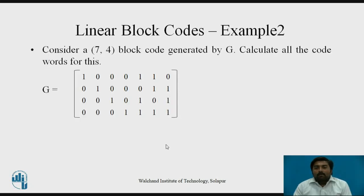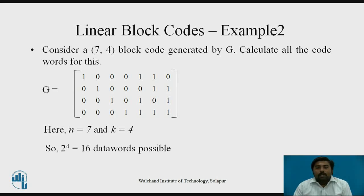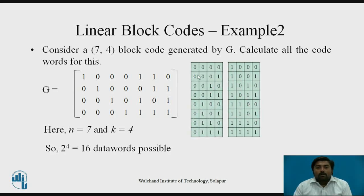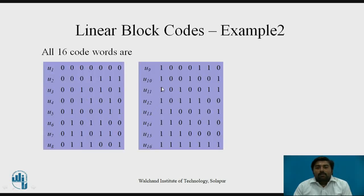Let us take another example with a (7, 4) block code. The generator matrix is given, where n equals 7 and k equals 4. There are 2 raised to 4 equals 16 possible data words. Using the procedure of multiplying each data vector by the generator matrix, we find a code word for each data word. These are the 16 possible data words and their corresponding 16 code words, which you can calculate and verify.